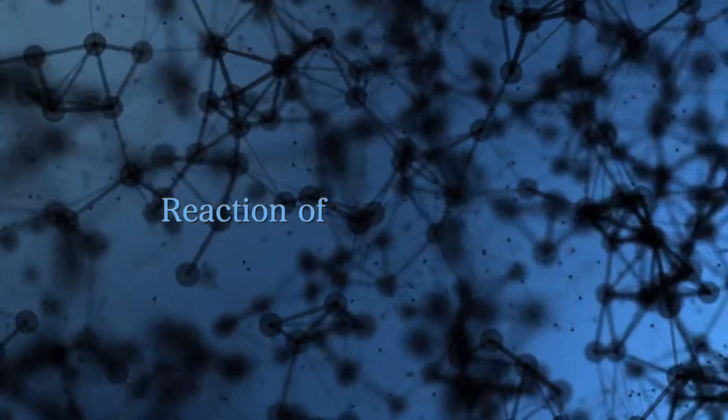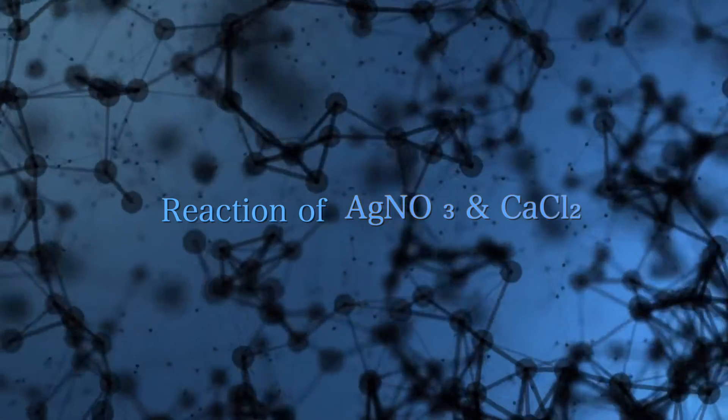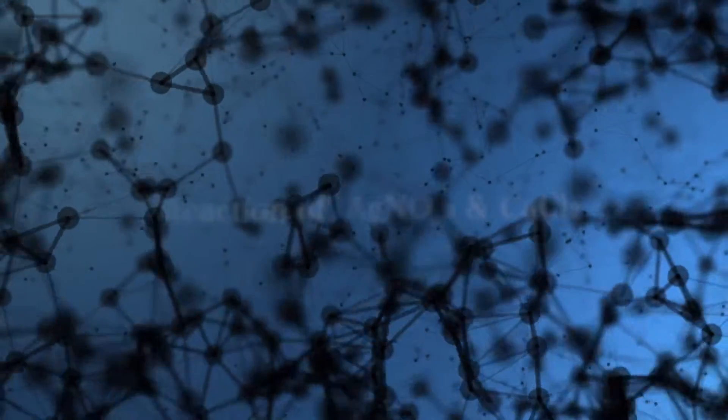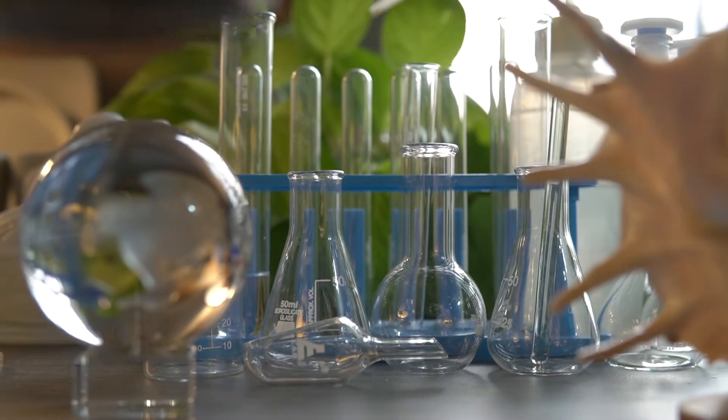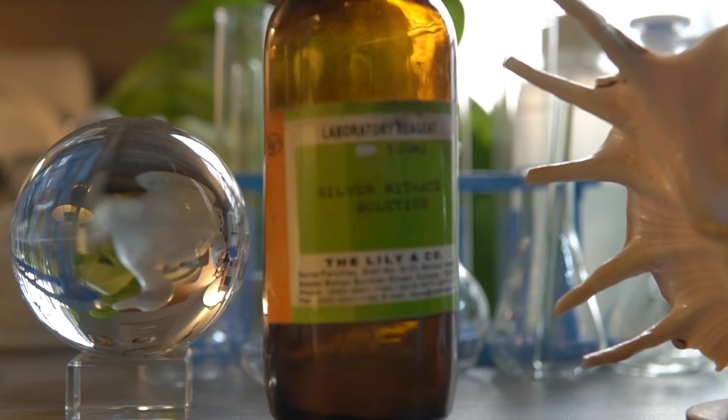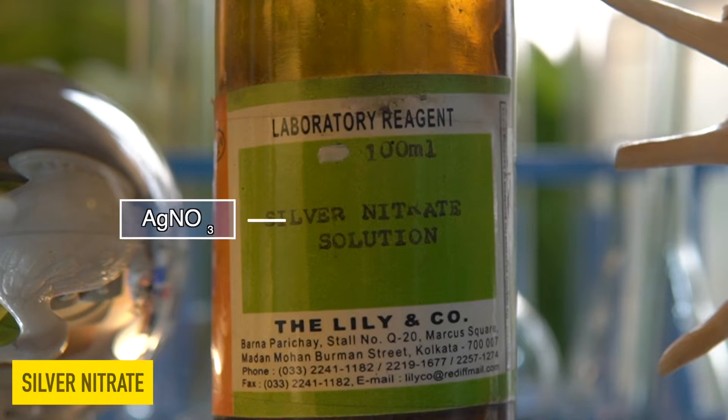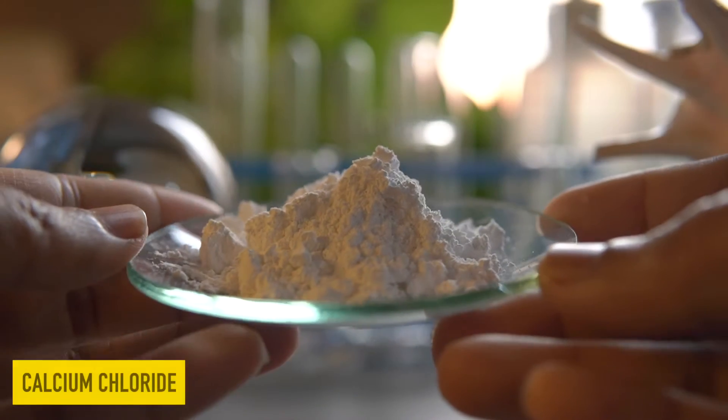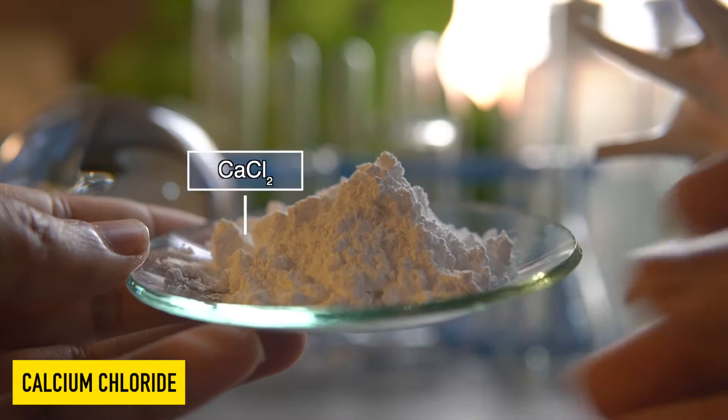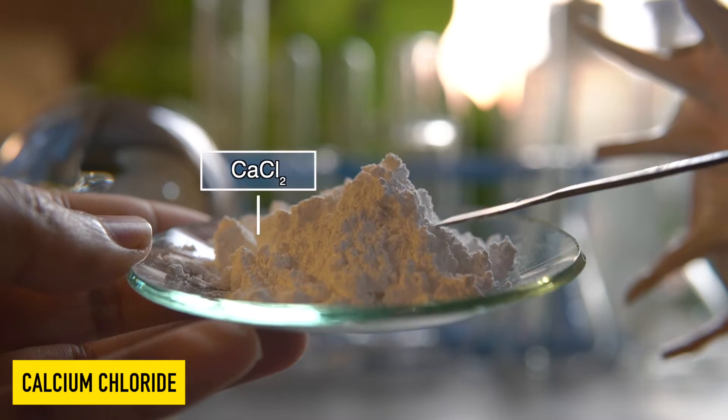Today we are going to see the reaction of silver nitrate and calcium chloride. The chemicals required are silver nitrate, which is transparent or has no color at all, and calcium chloride. Calcium chloride is a white hygroscopic